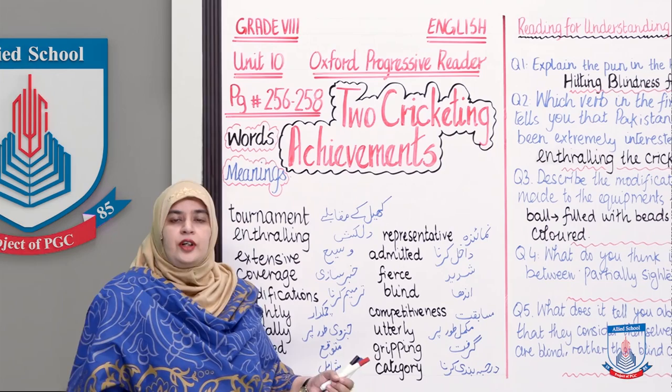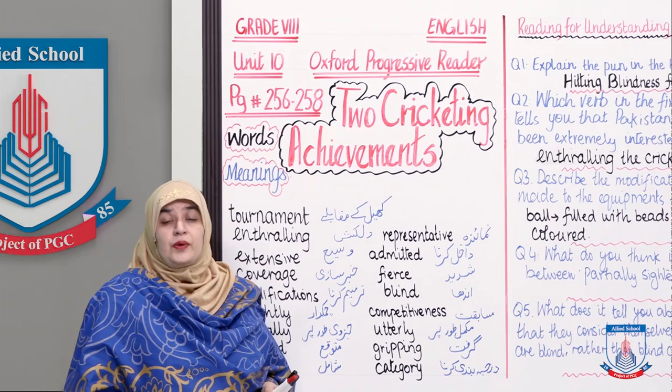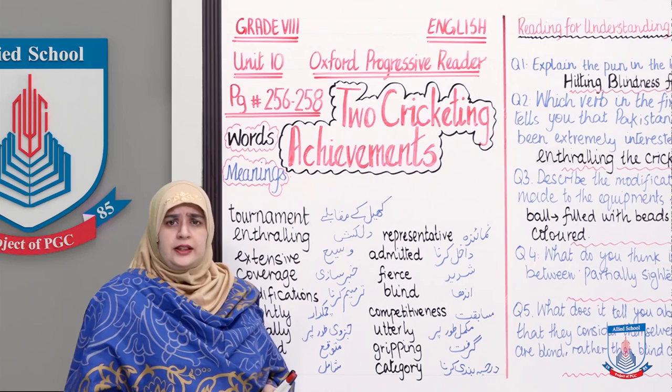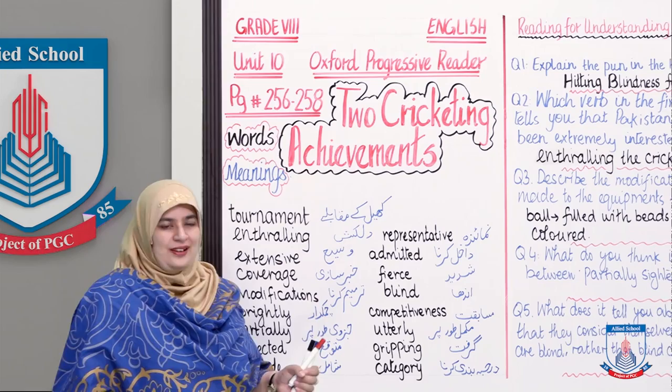Those were the words and their translations from Document 1, which is titled 'Two Cricketing Achievements' — specifically the headline 'Hitting Blindness for Six.' Document 2 did not have any particularly difficult words requiring translation. Now let's move on to the reading for understanding and details, and question answers in specific.